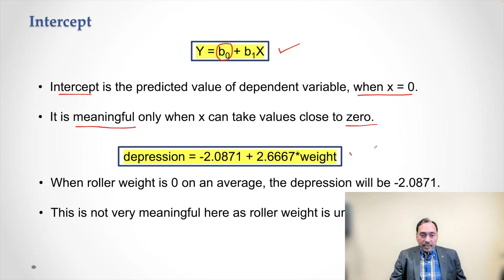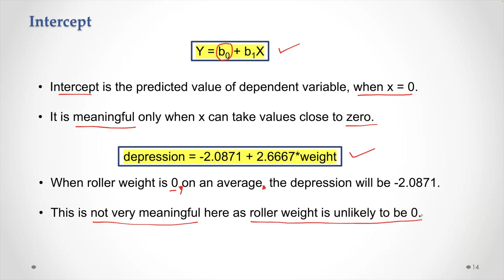Our equation is this. And what it means for the intercept, when roller weight is 0, on an average, the depression will be negative 2.0871. That's what it means. We always talk in terms of on an average because we are estimating Y. Now, this is not very meaningful. Because in this case, roller weight is unlikely to be 0. If we have a roller, it's not going to become air and have a 0 weight.